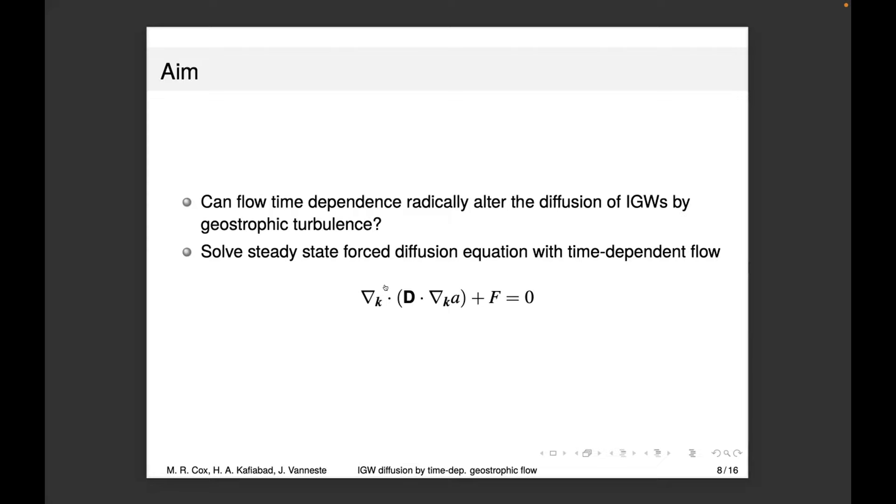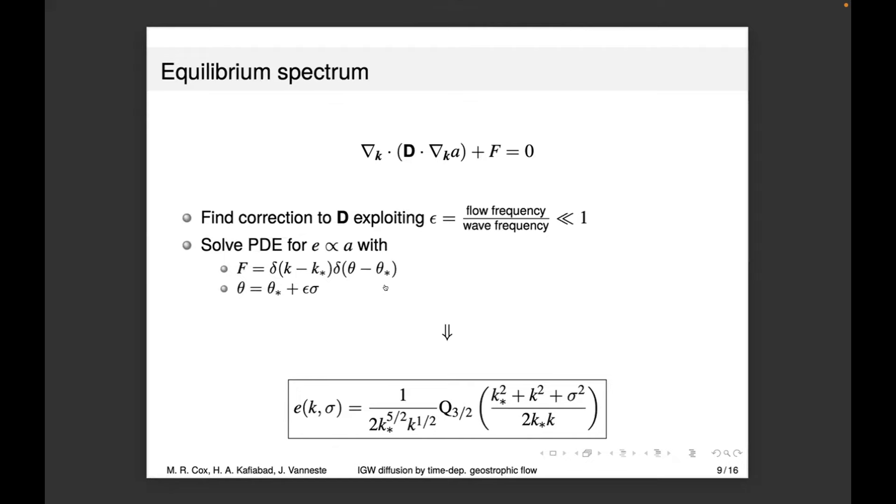We've removed the time derivative—just steady state with time-dependent flow. We use matched asymptotics to find a correction to the diffusivity. There's a correction given by time dependence. The small parameter we're using is the ratio of the flow frequency to the wave frequencies. We solve the resulting PDE for energy density using a forcing in a ring—constant radial wave number and constant theta. This can be generalized to more general forcings by integrating.